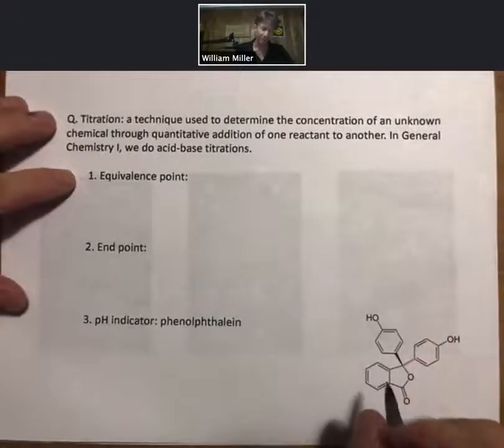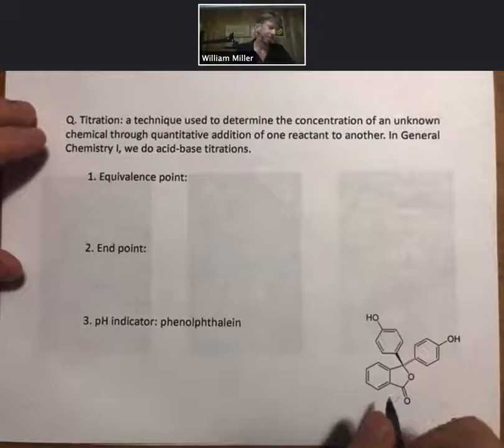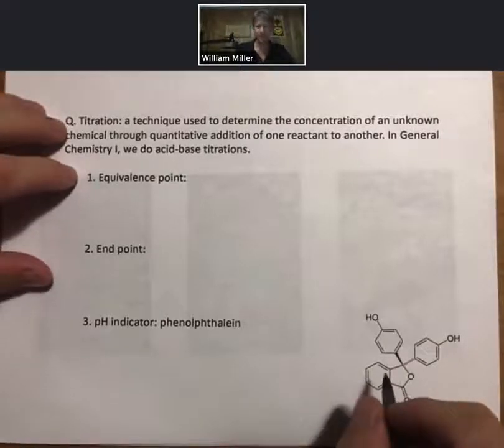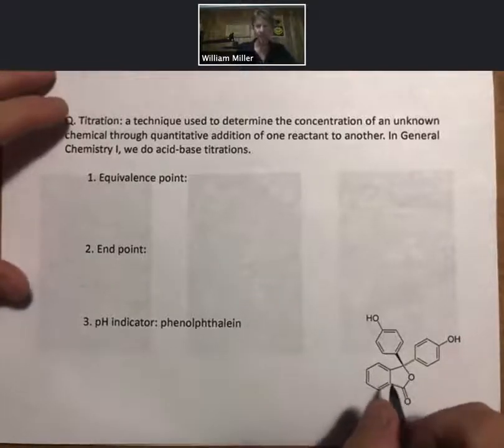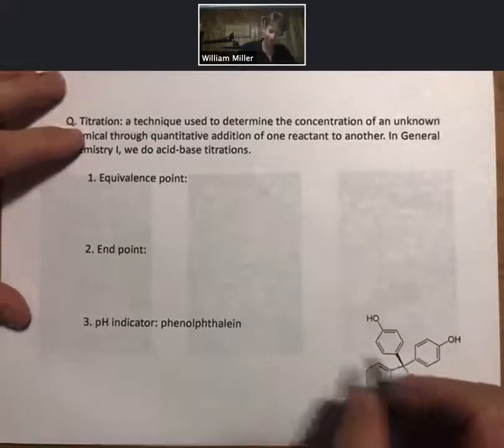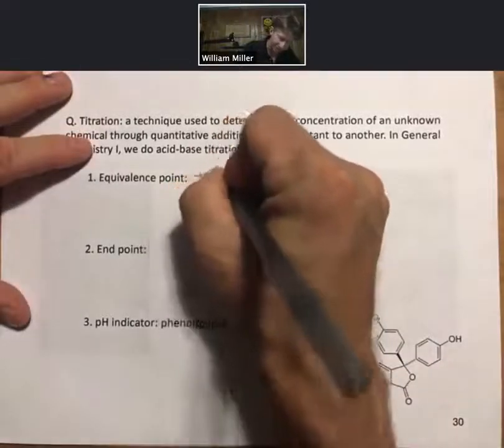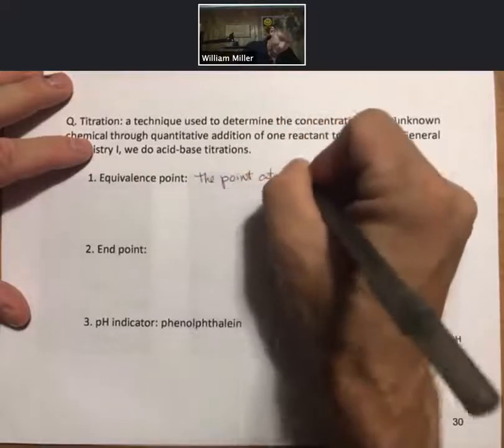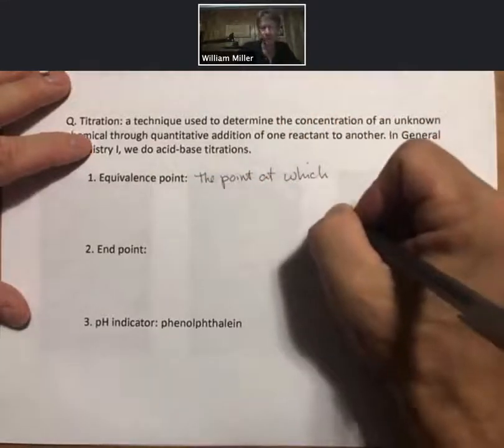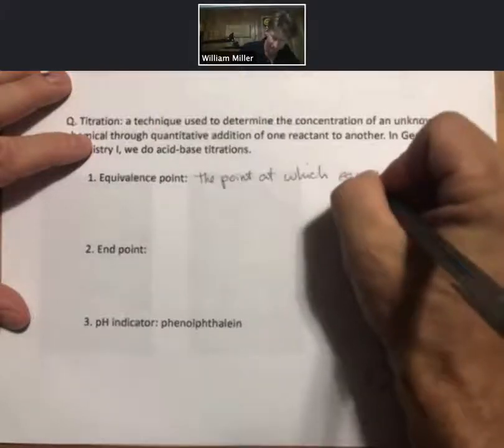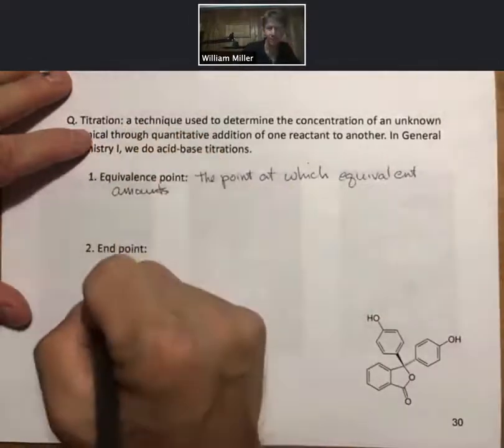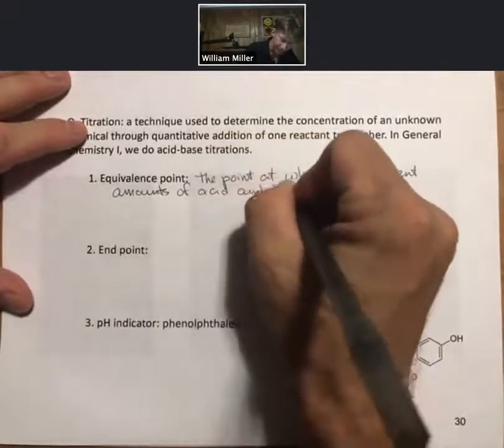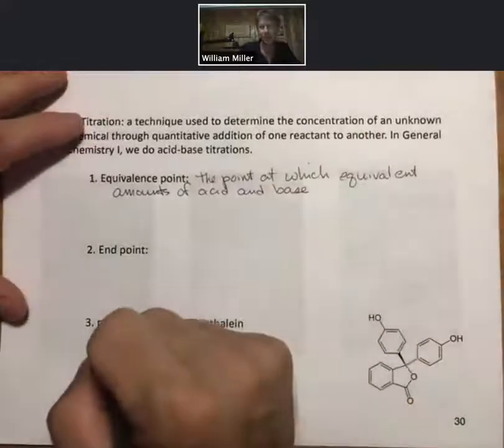Now let's start with some definitions. The definition of the equivalence point is the point in a titration in which, well it's sort of self-fulfilling here, the point at which equivalent moles of acid and base have been added to the solution.